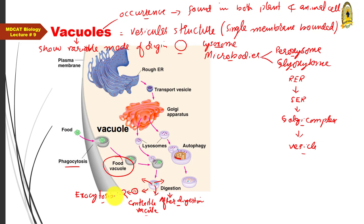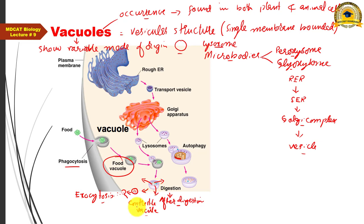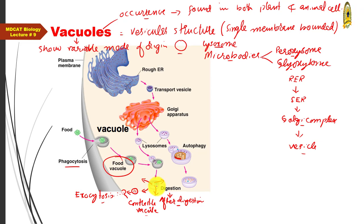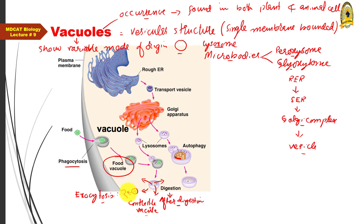The contractile vacuole then fuses with the cell membrane and liberates its contents outside via exocytosis. So in animal cells, the food vacuole originates from the cell membrane during endocytosis, while the contractile vacuole originates from the secondary lysosome and eliminates waste from the cell.